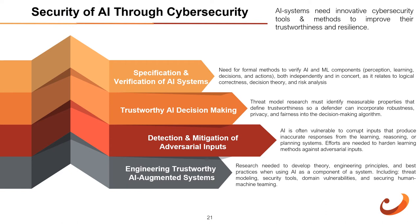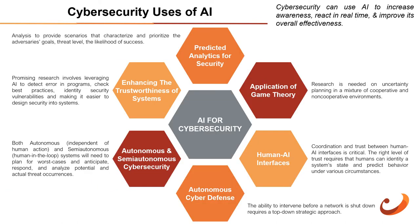Research is needed to develop theory, engineering principles, and best practices when using AI as a component of a system, including threat modeling, security tools, domain vulnerability security, and securing human-machine teaming. Just as AI systems need innovative cybersecurity tools to improve their trustworthiness and resiliency, cybersecurity can use AI to increase awareness, react in real-time, and improve overall effectiveness — including self-adaptation in the face of ongoing attacks that alter attacker-versus-defender asymmetries.